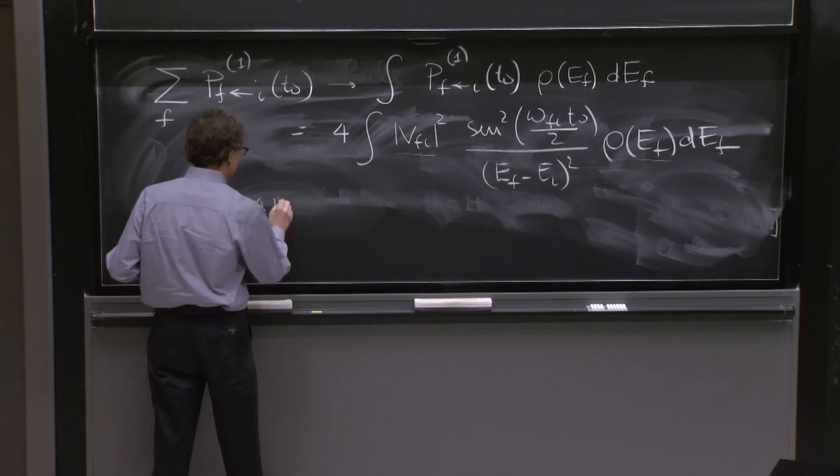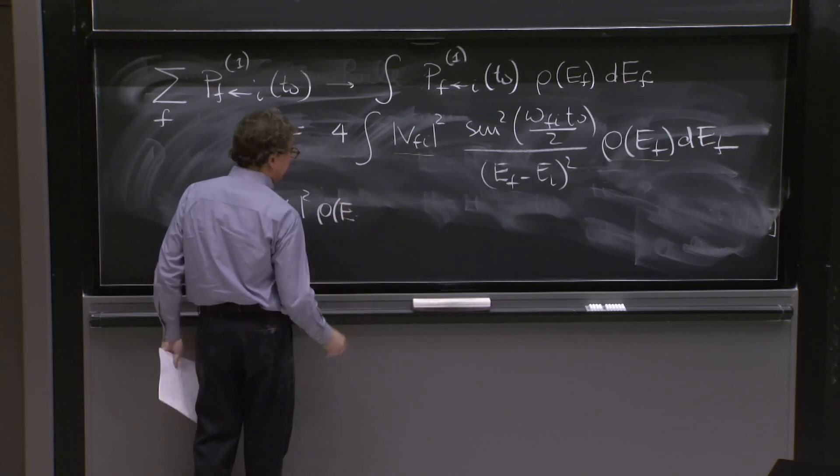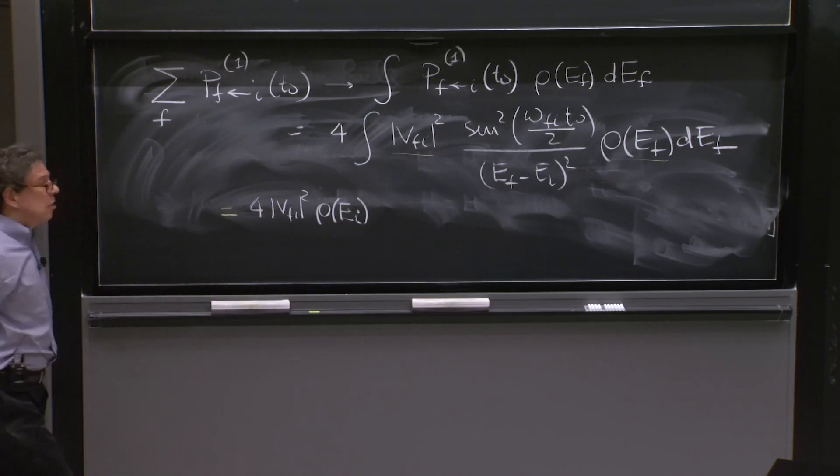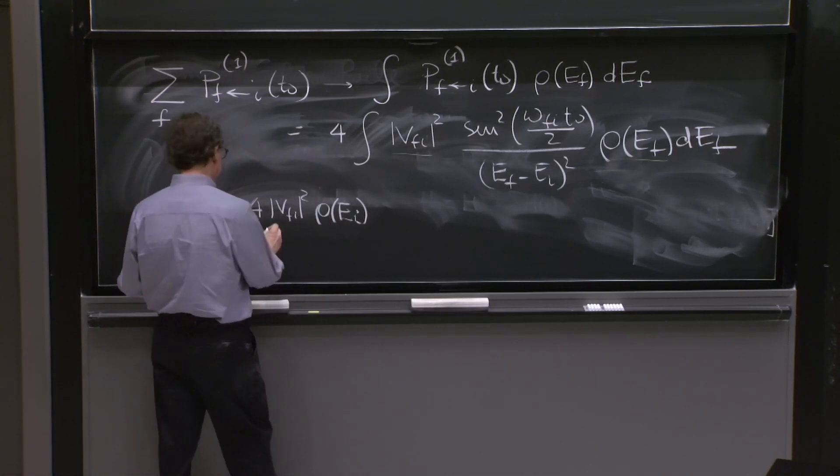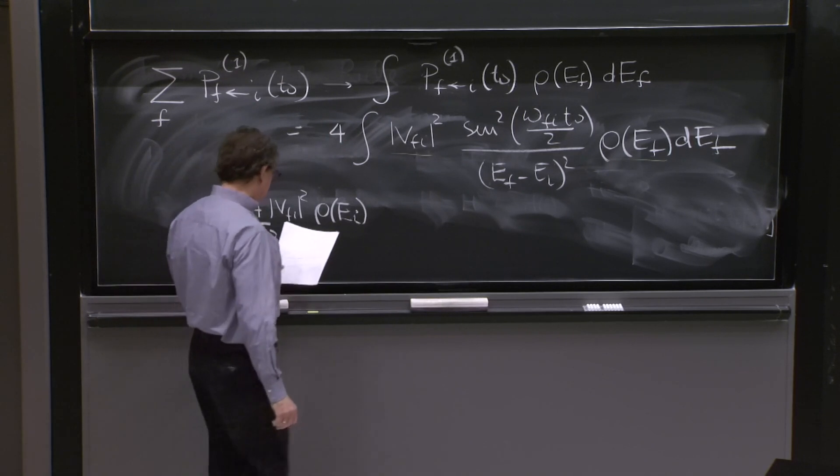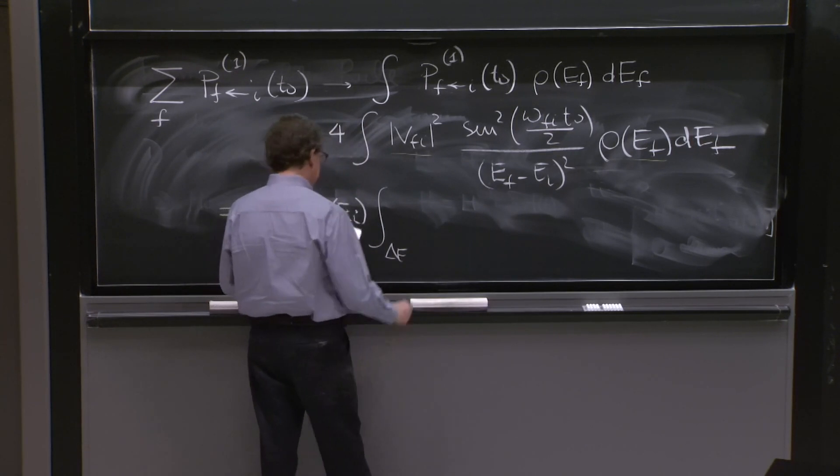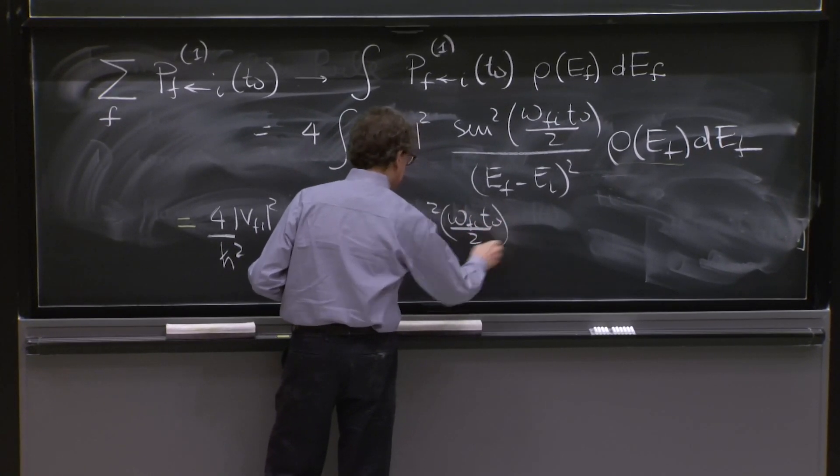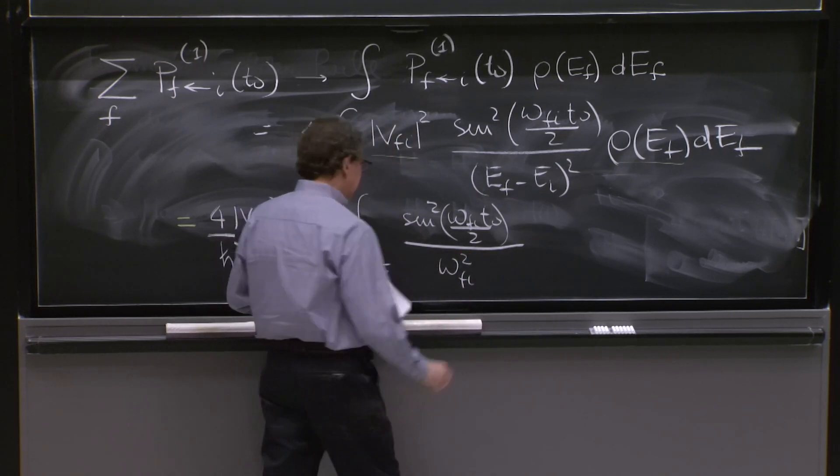And then we'll get 4 VFi squared rho of E. What should I put here? E sub i, is that right? Because if it's all evaluated at the initial energy Ei, if only a narrow band will contribute. I'll put an h squared here so that this will become omega Fi. And now I will integrate over some range of energies, the function sine squared omega Fi t0 over 2 over omega Fi squared dEf.